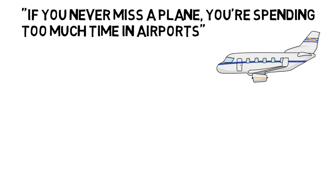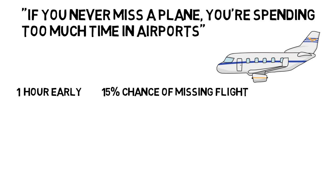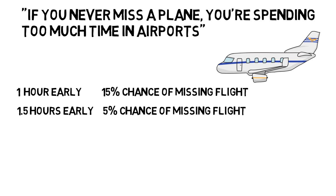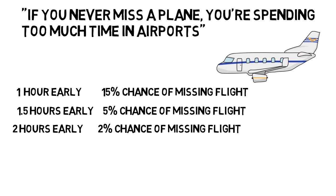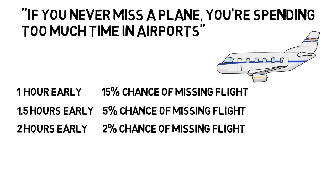Let's go into the math. If you get to the airport one hour early, let's say you have a 15% chance of missing your flight. If you arrive 1.5 hours early, you have a 5% chance. If you arrive 2 hours early, you have a 2% chance of missing your flight. These might not be totally true, but there are some values we could assign to these based on data, and these seem reasonable.